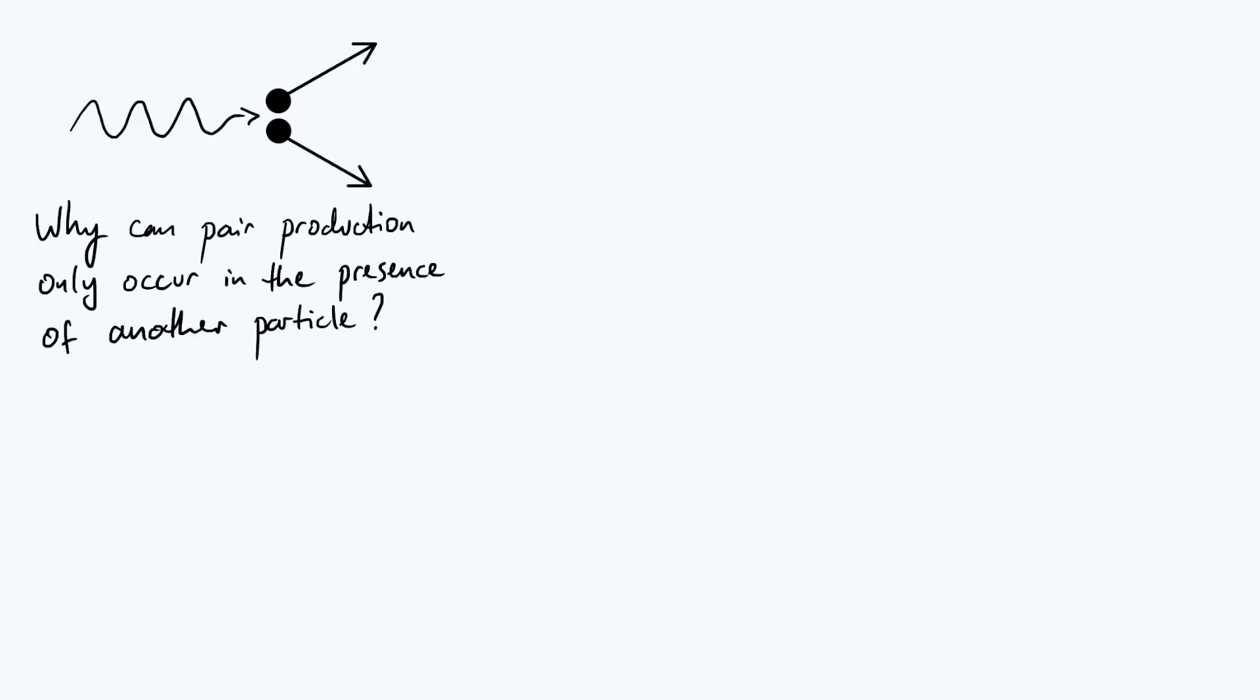Hi everyone, in this video we're going to talk a little bit about pair production, which is this process in which a photon produces a particle-antiparticle pair.